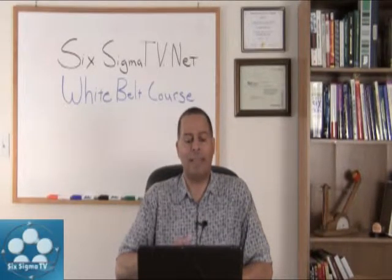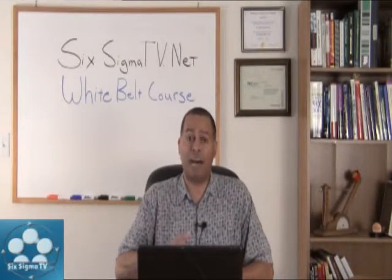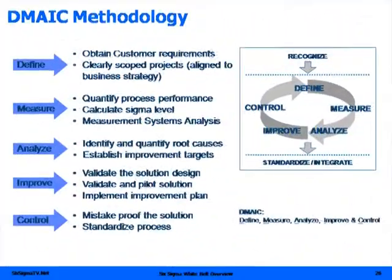DMAIC consists of the Define phase, the Measure phase, the Analyze phase, the Improve phase, and the Control phase. We're going to take you through an overview of all of these phases, but first I'm going to start with the Define phase.